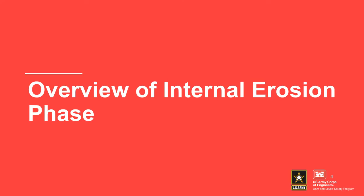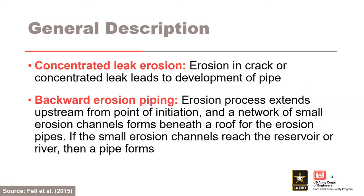Progression is the third phase of internal erosion. For concentrated leak erosion, erosion in a crack or concentrated leak leads to the development of a pipe. For backward erosion piping, the erosion process extends upstream from the point of initiation, and a network of small erosion channels forms beneath a roof for the erosion pipes. If the small erosion channels reach the reservoir or river, then a pipe forms.